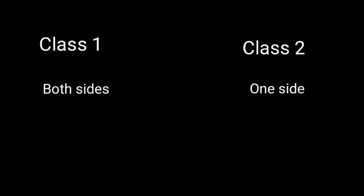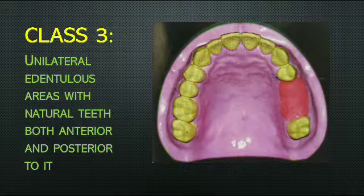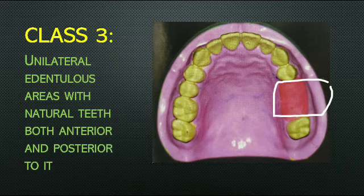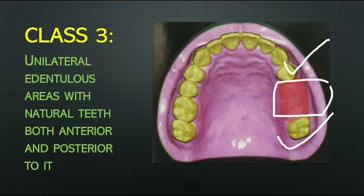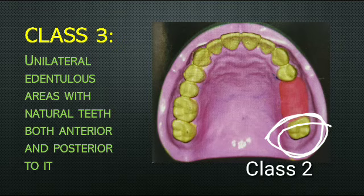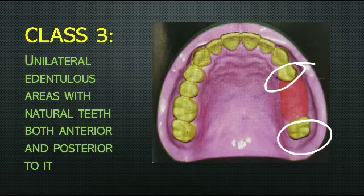Class three is unilateral edentulous areas with natural teeth both anterior and posterior to it. In this diagram, the edentulous space is bounded by natural teeth anteriorly as well as posteriorly. In class one and class two, natural teeth were not present on both sides of the space. Because this edentulous space is bounded by natural teeth anteriorly and posteriorly, it is class three.